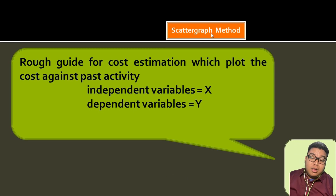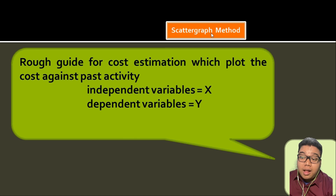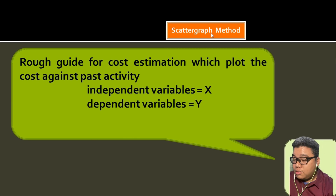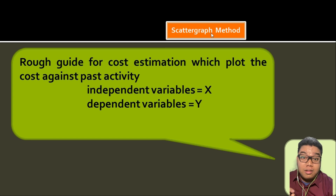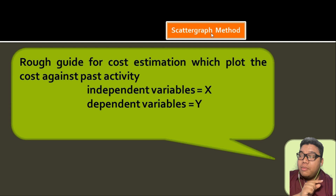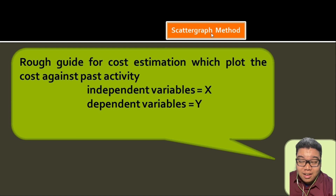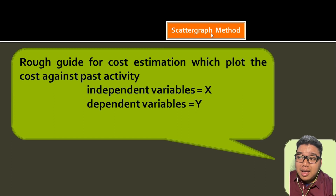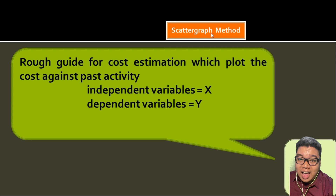The scatter graph method is a rough guide for cost estimation that plots cost against past activity levels. We plot all X and Y data points, draw a straight line through the pattern we observe, and that line gives us our cost formula.